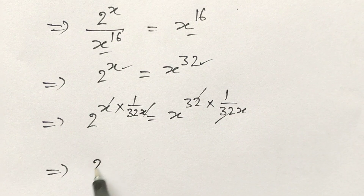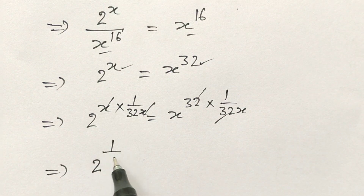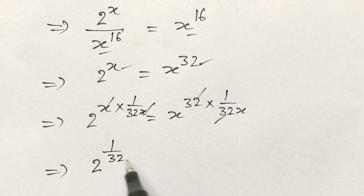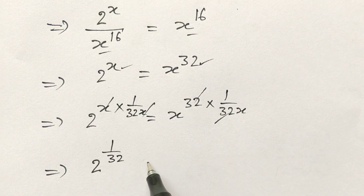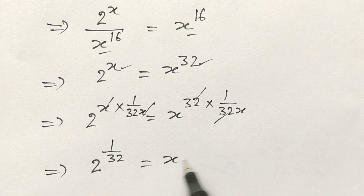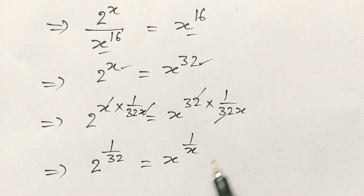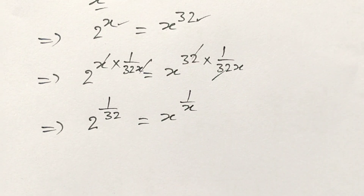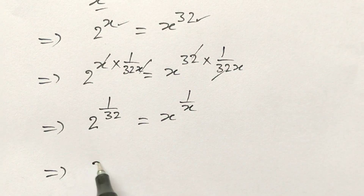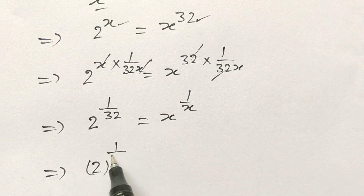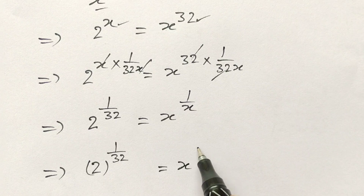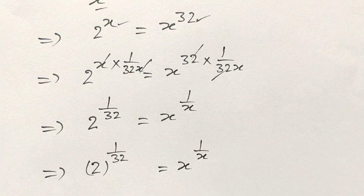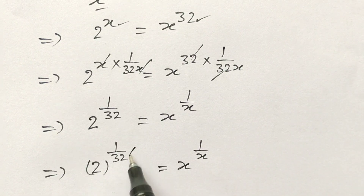Now we have 2 to the power 1 over 32 is equal to x to the power 1 over x.